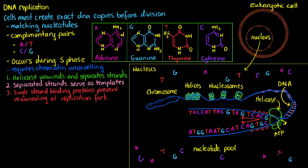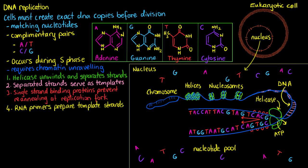In our next step of DNA replication, we're going to see RNA primers binding to the template strands. This is done by an enzyme called DNA primase, or just primase. On one strand we have a single DNA primase, but on the other strand we have a couple. Why is that? It's because of the activity of our next enzyme, DNA polymerase. But first let's place these RNA primers. Within RNA we use a base called uracil instead of thymine.